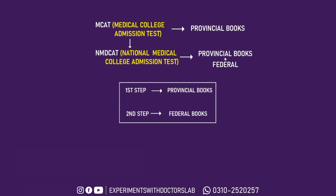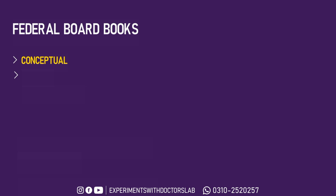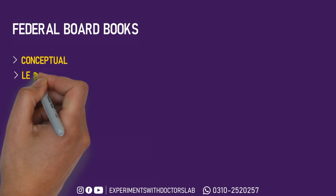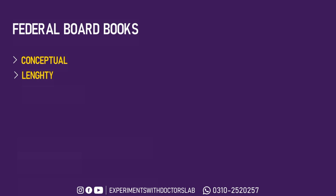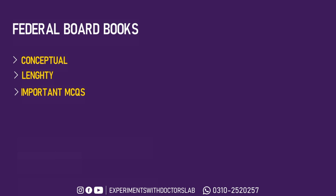After completing the Sindh Board, we have to shift to federal books — federal books also have to be studied. The difference between the federal books and the Sindh textboard is that in the federal books, the concepts are more detailed and the topics are more lengthy. At the end of chapters in federal books, there are some MCQs given, and these MCQs come in the paper.